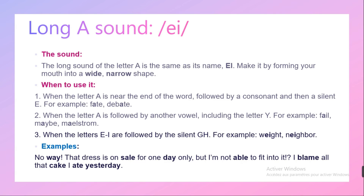For example: 'fate', 'debate'. We don't say 'fatey' or 'debatey' — the E is silent, which makes the first vowel long: fate, debate. This is called the silent E rule, which makes the preceding vowel long.